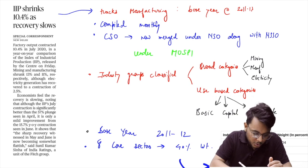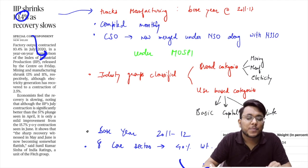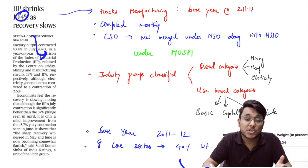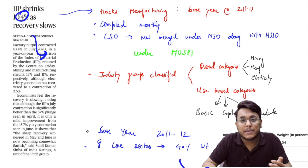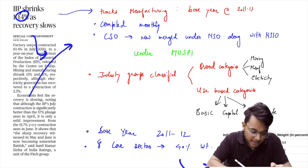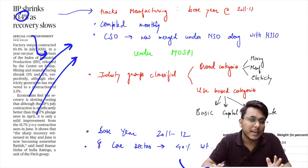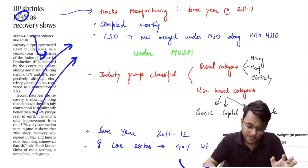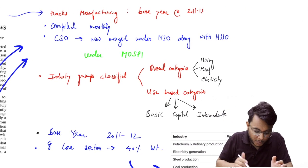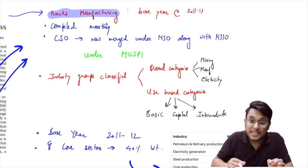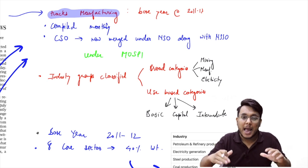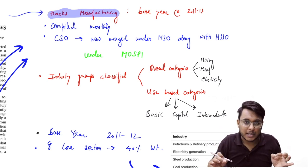The next article mentions that IIP has shrunk by 10.4 percent as recovery has not been very good. Though shrinkage is still there, this is very good compared to April's shrink of 57 percent. The numbers are not important as they change every year, but questions have been asked about IIP in prelims. IIP stands for Index of Industrial Production — this index tracks the movement of manufacturing and sees how much volume of goods and services are being manufactured in the country.